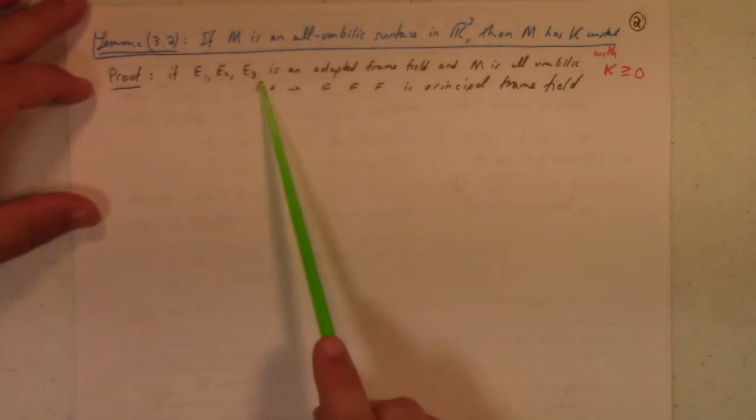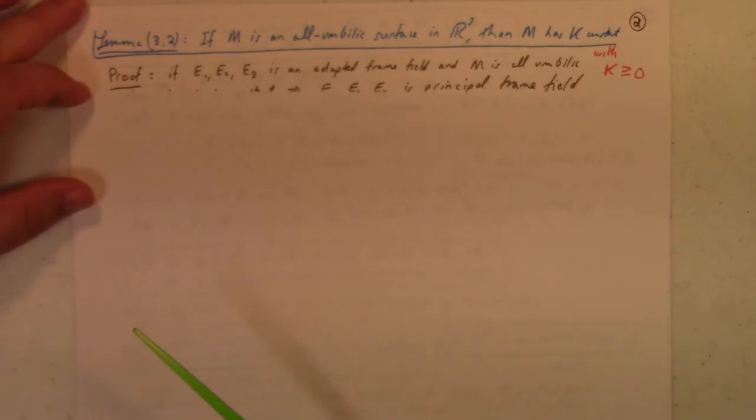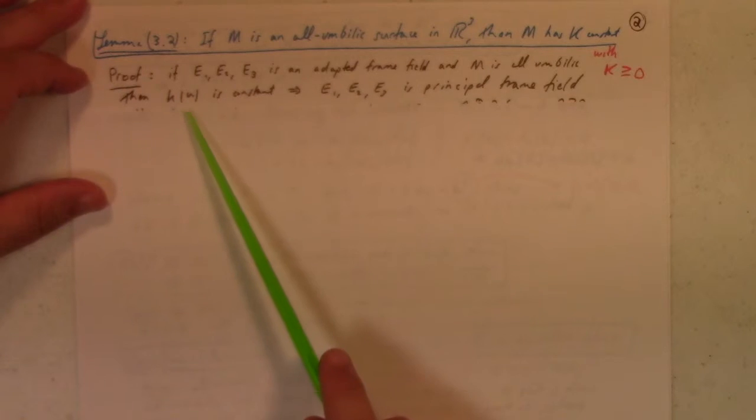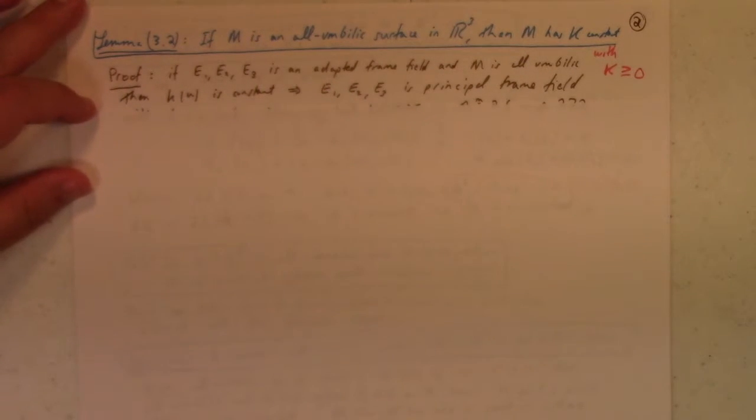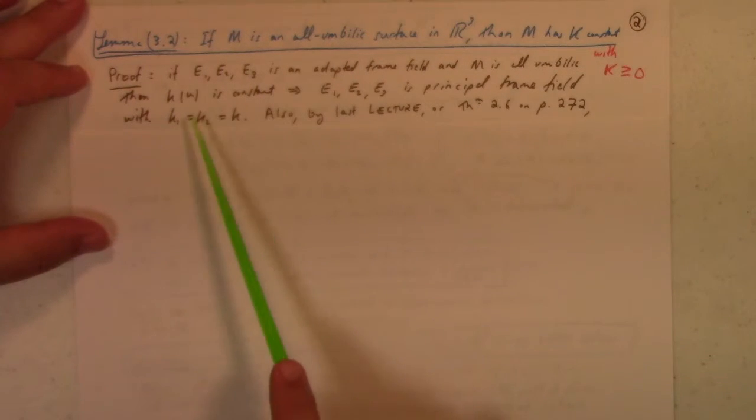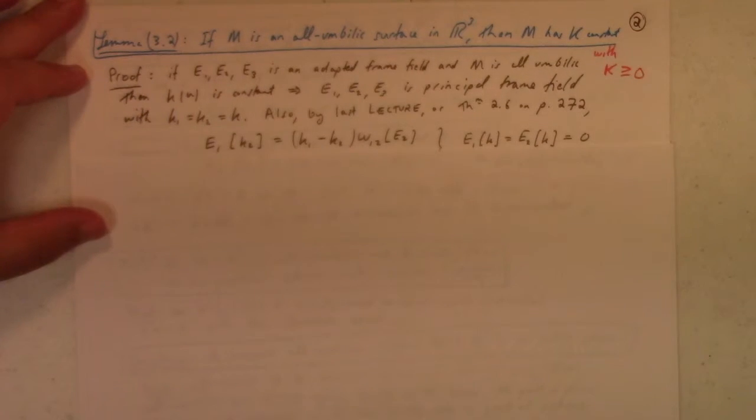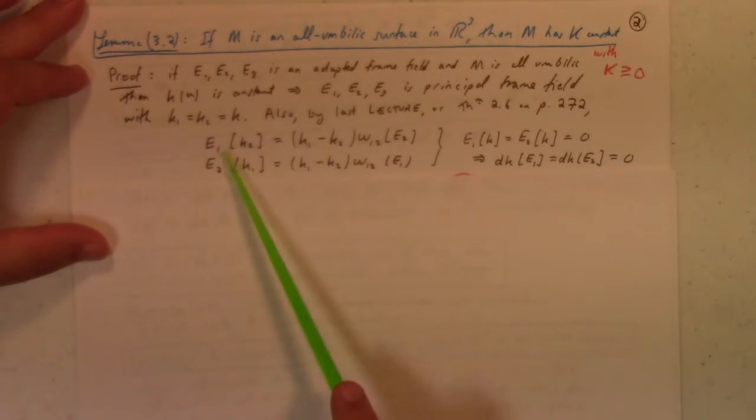So if we have an adaptive frame field e1, e2, e3, and m is all-umbilic, then that means that the principal curvature is constant, which then means that e1, e2, e3 is a principal frame field, because e1 and e2 both have to be pointing in principal directions because everything's a principal direction. And also, k1 and k2 are equal, and they're equal to k. And by the last lecture, we had these awesome formulas in terms of e1 acting on k1, being the difference of k1 and k2, omega 1, 2. Remember, we derived these at the end of the last lecture for a principal frame.